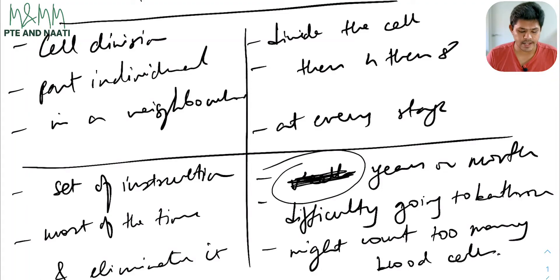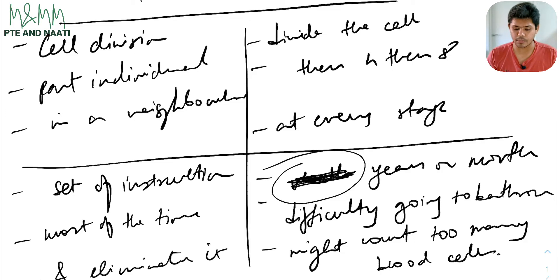In this lecture, the speaker speaks about cell division, part individual, in a neighborhood. The speaker also mentions a set of instructions, most of the time, and eliminates it. The speaker highlights that dividing the cell — then four, then eight — and at every stage is very important. The speaker concluded by mentioning that years or months, difficulty going to the bathroom, and might count too many blood cells were also important.